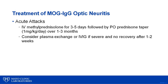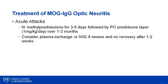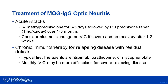Acute treatment for MOG optic neuritis is with IV methylprednisolone for 3-5 days. We recommend a longer oral prednisone taper over 1-3 months, because of the higher potential to relapse compared to other forms of optic neuritis. If there is no recovery at 1-2 weeks and the vision loss is severe, one could consider plasma exchange or IVIG. The optimal treatment for MOG-associated disorder is still being determined. Similar to aquaporin-4 positive NMO, MS disease-modifying agents do not appear to be effective, and therefore this entity is important to be distinguished from MS.